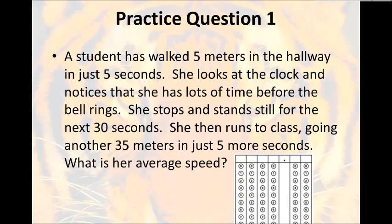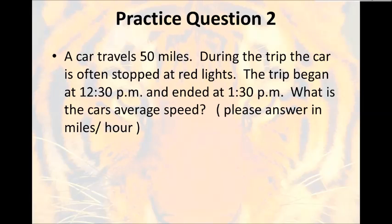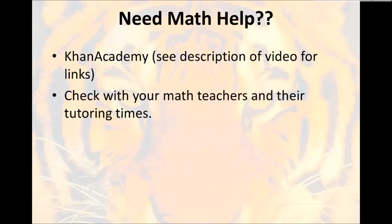Now, on this one, if you need more time, go ahead and pause the video, but this question is for you to work out. Now, you've seen me work out a couple. Practice question number one. A student has walked five meters in the hallway in just five seconds. She looks at the clock and notices that she has a lot of time before the bell rings. So, she stops and stands still for the next 30 seconds. She then runs to class, going another 35 meters in just five more seconds. What is her average speed? I'm going to help you get started with this one because it's a little different, but your formula is average speed equals total distance divided by the total time. You've got a lot of distances here and you got a lot of times. You need to think about what was the total distance that she went out of all her distances and divide that by the total amount of time it took her to get her average speed. I'm going to go on to the next one. Pause the video if you need more time to work this through.